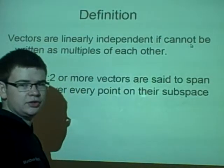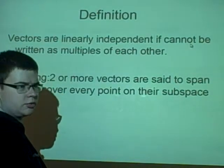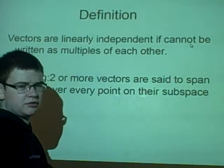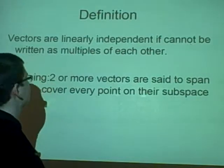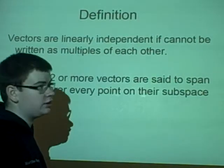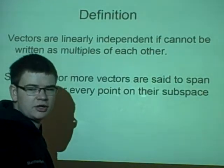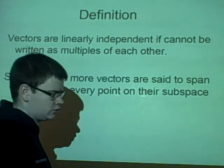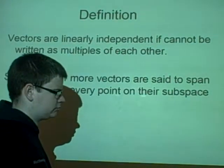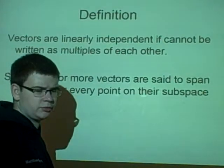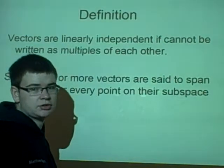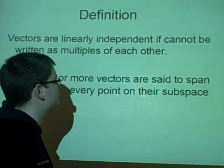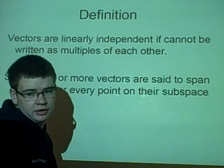First of all, the definition. We started off, he just did a quick definition. Some vectors are linearly independent if they cannot be said to be multiples of each other. So if you had two vectors and one of them, if you times it by two, you've got the second vector, then they are not linearly independent, they're linearly dependent.